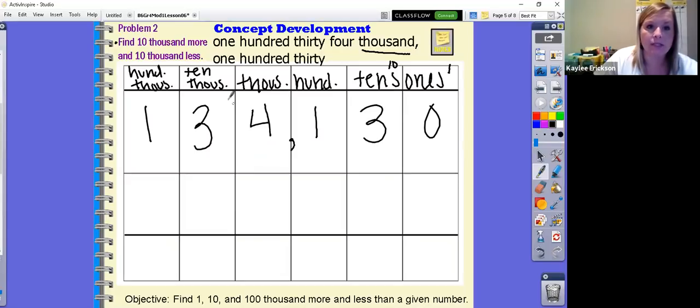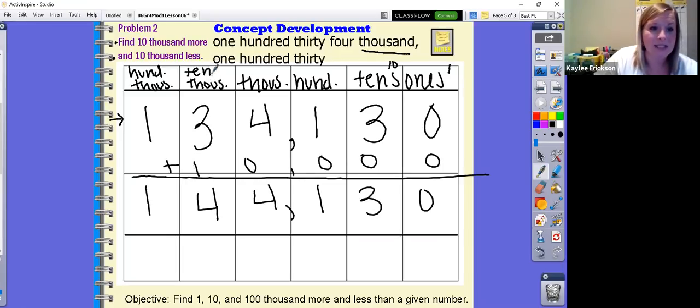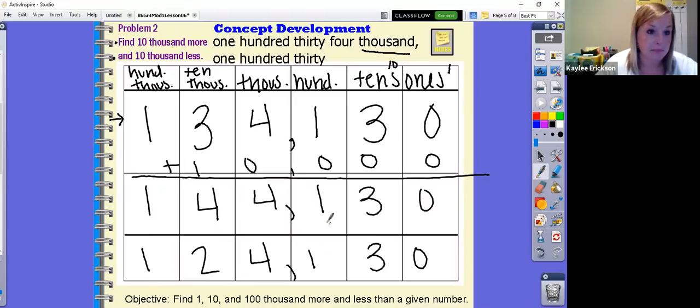So now in our problem, we're going to find 10,000 more and 10,000 less than our original number. So my 100,000 is going to stay the same. So my 10,000, I want one more because I'm in the 10,000 place value. So I'm going to do 144,130 because what we really did is we added 10,000. And we can do that by just adding one to the 10,000 column because that's the place value that it's in. Now we're going to find 10,000 less than our original number. You can go to the 10,000 column and subtract one from it because that's one 10,000 less. So that's going to give us 124,130.